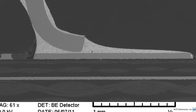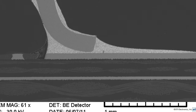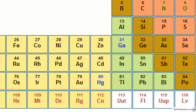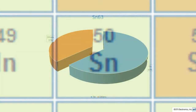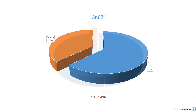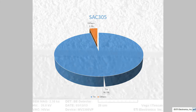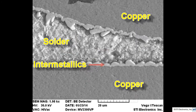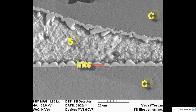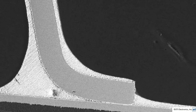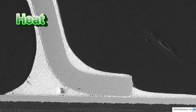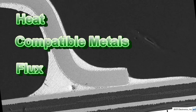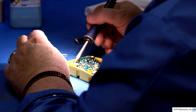We have discussed solderability and wetting. Now it's time to see how wetting occurs. To understand wetting, we need to understand the metals used in the soldering process. The one of particular importance is tin. Tin is used in both SN63 solder and in the most common lead-free solders. Tin is a critical element of the soldering process because it loves to dissolve other metals and form molecular bonds that we call intermetallics. We need three things for a good solder connection: heat is required to melt the solder, we also need compatible metals, and finally we need flux to provide us with clean surfaces. Heat can be delivered by a soldering iron, a reflow oven, and other methods and equipment.